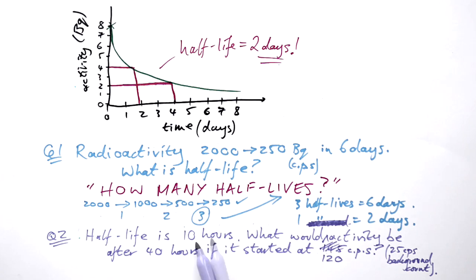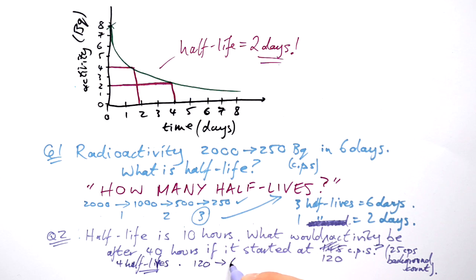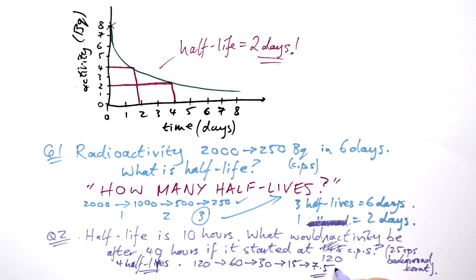How many half-lives? One half-life is 10 hours, and we have 40 hours, so that means we've got four half-lives. We're going from 120 down to 60 — one half-life — then two half-lives, three half-lives, and then one more. 7.5 counts per second, or 7.5 Becquerel, is our new activity.